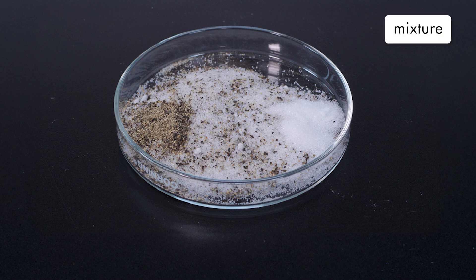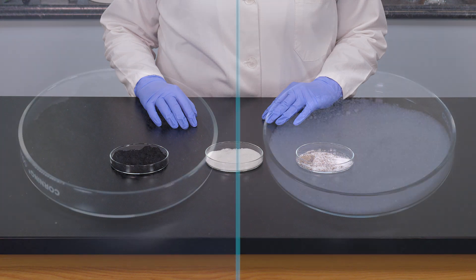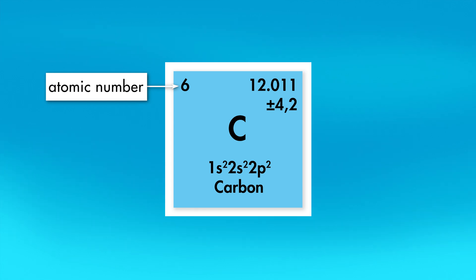We will discuss mixtures more in our next lab. For now, let's take a closer look at these two pure substances. As we learned earlier, graphite is a form of carbon, so let's look at the physical and chemical properties of carbon. Since carbon is an element, it has its own position on the periodic table of the elements. Carbon has an atomic number of six, which means each carbon atom has six protons in its nucleus.